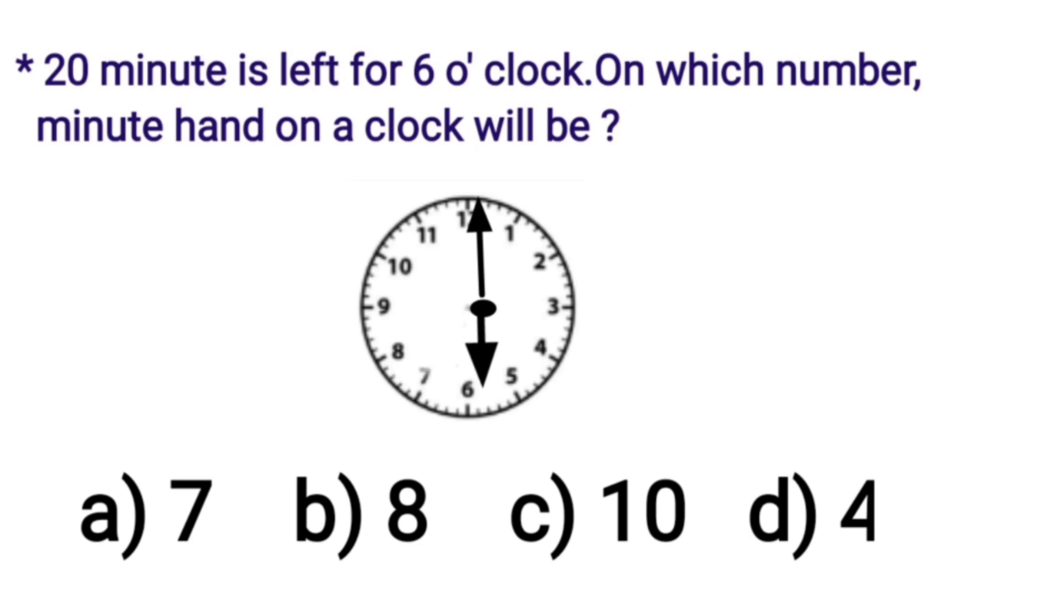Children, we already know that when the minute hand moves from one number to another number, it covers the distance of 5 minutes. In this way, each number is 5 minutes away from the other one. So, we have to find 20 minutes to 6. That's why we will move in the reverse direction. So, let's start from 12 to 11.